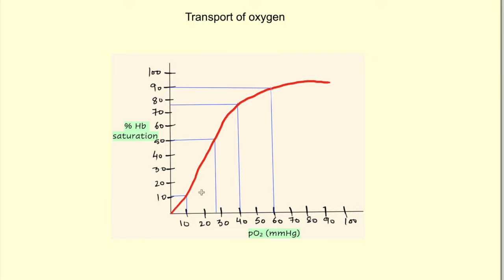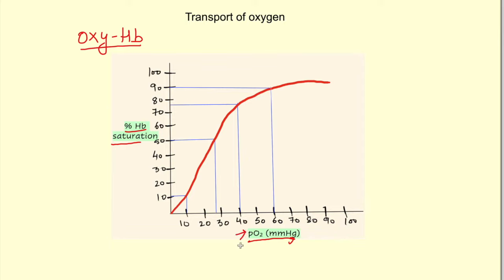The relationship between hemoglobin binding and oxygen is given by the oxyhemoglobin dissociation curve. On this curve, the x-axis shows partial pressure of oxygen in mmHg, and the y-axis shows percentage hemoglobin saturation. Depending on the partial pressure of oxygen — regardless of whether it is in arteries or veins — there will be a corresponding hemoglobin saturation.